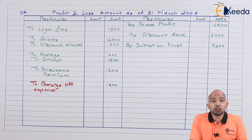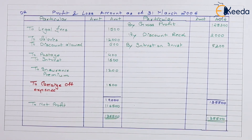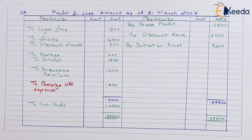Now that we've mentioned all the items of both the debit side and credit side of the profit and loss account, let's figure out the interim balance. We can see that we have a net profit amounting to one lakh sixteen thousand five hundred, which means the debit side is lower and the credit side is higher. Now let's prepare the balance sheet.